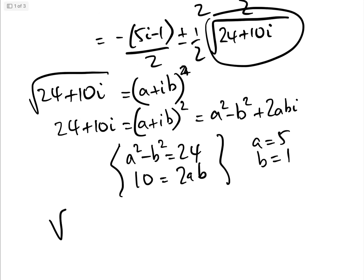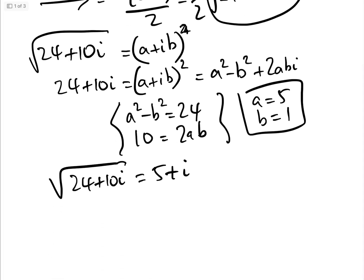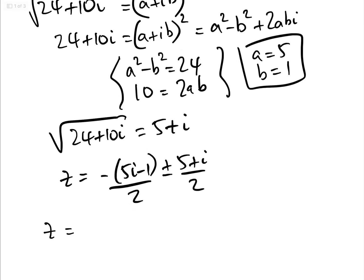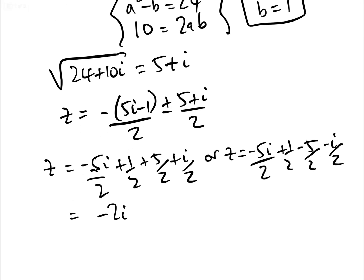We can see by inspection that the square root of 24 plus 10I equals 5 plus I. So we can now go back and say that Z equals minus 5I minus 1 over 2, plus or minus (5 plus I) over 2. Therefore Z equals either minus 5I over 2 add a half add 5 over 2 add I over 2, or Z equals minus 5I over 2 add a half minus 5 over 2 minus I over 2. That gives us either Z equals 3 minus 2I or Z equals minus 2 minus 3I.